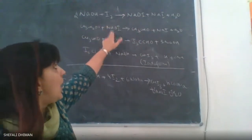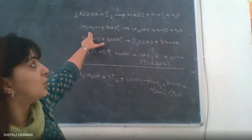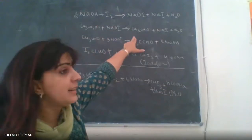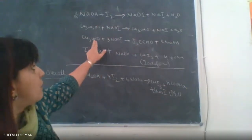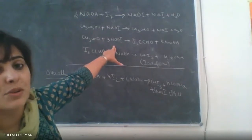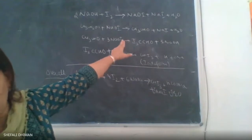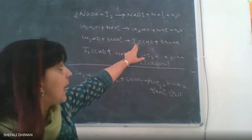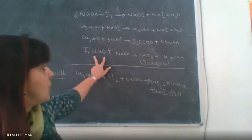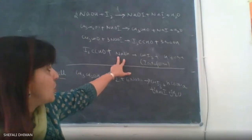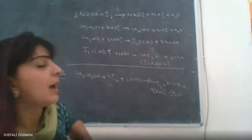This NaOI is going to react with ethanol to form aldehyde. Aldehyde will further react with more sodium hypoiodite to form triiodo acetaldehyde, which will further react with sodium hydroxide to form Iodoform.